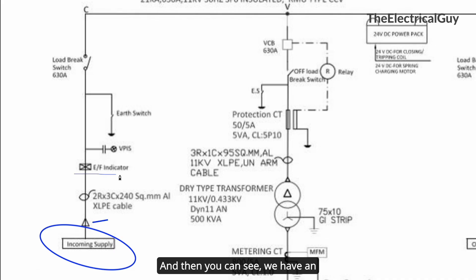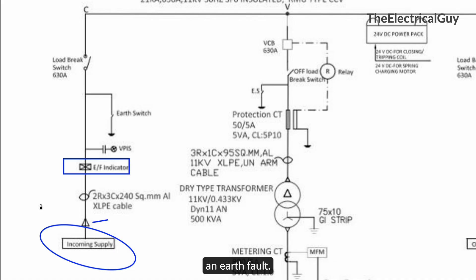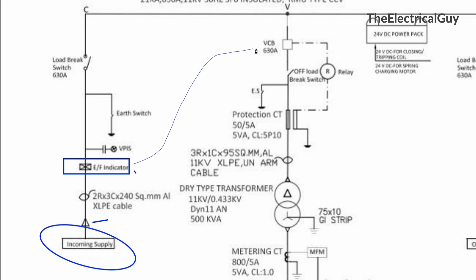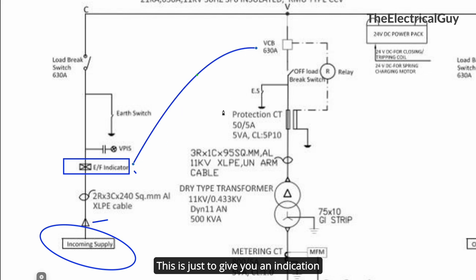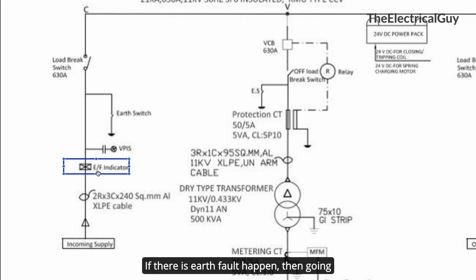Next, we have an earth fault indicator here. This is just an indicator which will give you an indication in case there is an earth fault. Remember, this is just an indicator — it is not a relay and is not capable of giving a command to a circuit breaker to trip. It is simply to give you an indication about the earth fault condition.